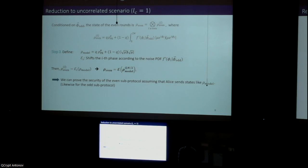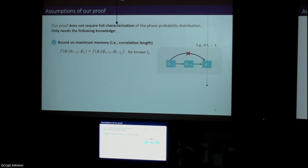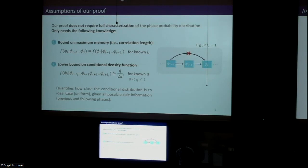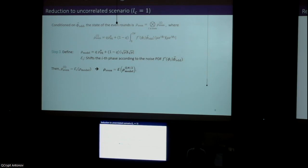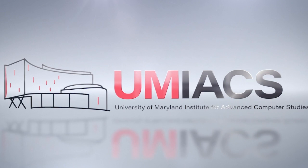But this is not an assumption because what we show is that for any case, we can prove that we can prove the security assuming that Alice generates these kind of states rather than the actual states that she generates. So the only assumptions that we have are these two: that we know the maximum correlation length and that we know how close to uniform each phase is given all other phases that have information. Given these two assumptions, we can show that we can prove the security assuming that Alice actually generates these states which are characterized, unlike the actual source.